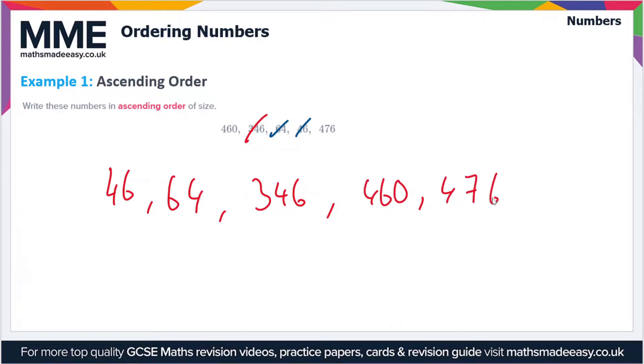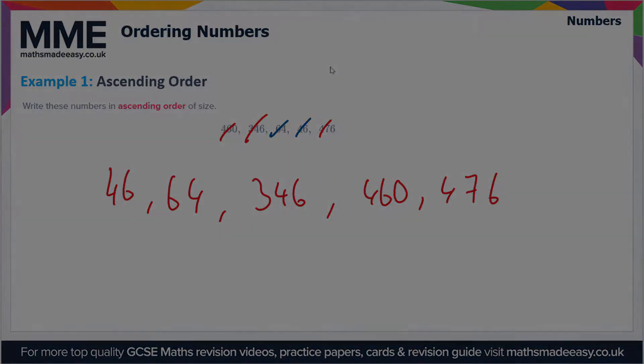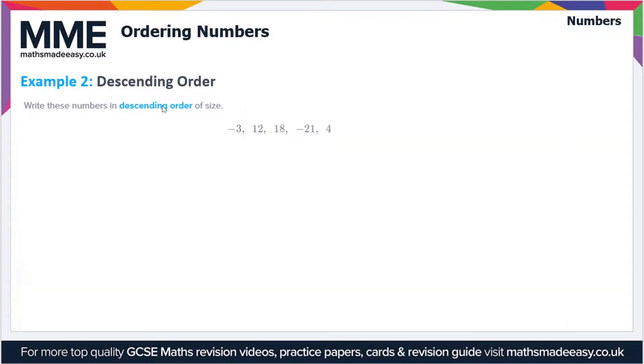Moving on to example two, write these numbers in descending order of size. We've got -3, 12, 18, -21, and 4. Descending means largest to smallest. Because we have negative numbers, we'll deal with the positive numbers first as we consider negative numbers to be smaller. The positive numbers are 12, 18, and 4. The biggest is 18, then 12, then 4.